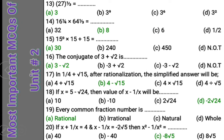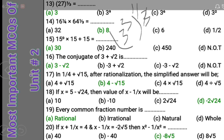Question 13: 27 whole power 1 upon 3 is equal to what? The factors of 27 give us 3 power 3, and whole power 1 upon 3. Since power on power means multiply: 3 and 3 cancel, giving 3 power 1, which is simply 3. The answer is 3.